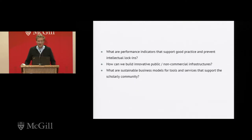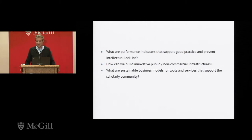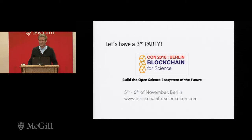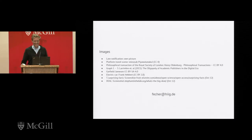To finish, here are three questions I think are relevant and could be discussed: What are performance indicators that support good practice and prevent intellectual lock-ins? How can we build innovative public or non-commercial infrastructures, and what would be good business models to do that? And what are sustainable business models for tools and services that support the scholarly community first? Also a commercial note: we are having a conference in November or December on blockchain for science, for those who want to see if the hype is true. Thank you very much.